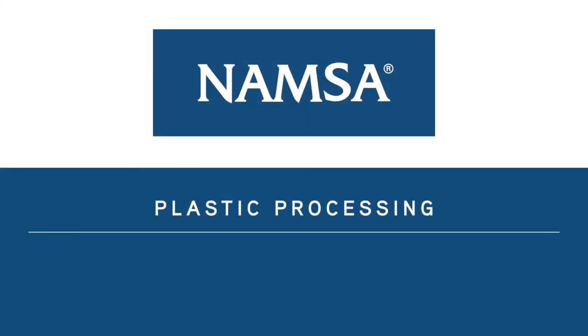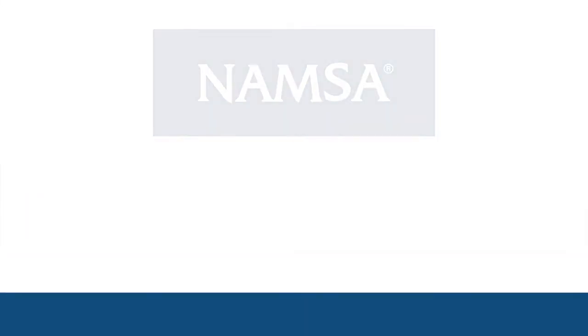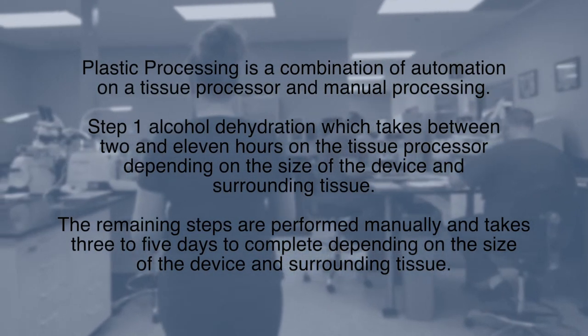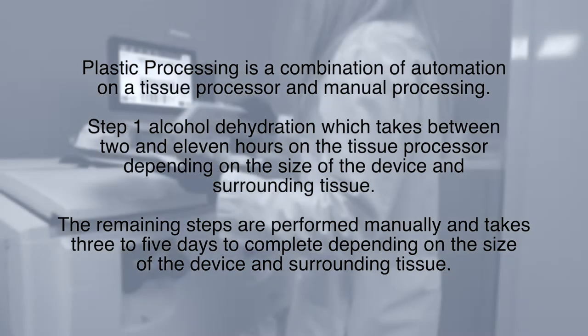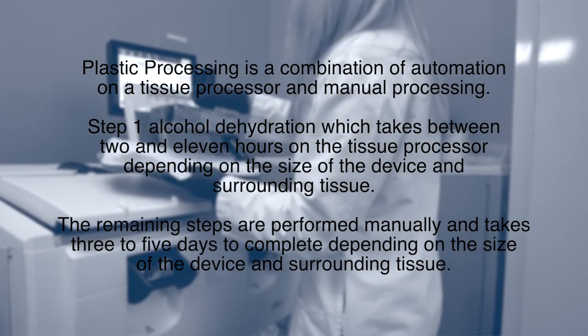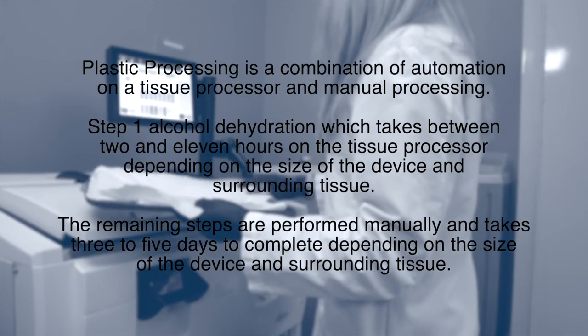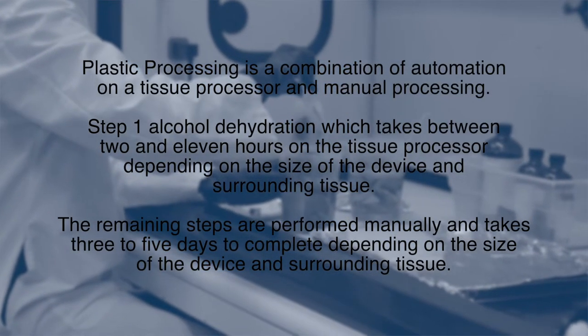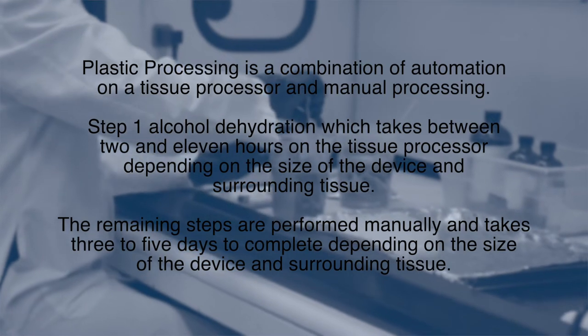Plastic processing. Unlike paraffin, plastic processing is a combination of automation on a tissue processor and manual processing. Step 1 is alcohol dehydration, which takes between 2 and 11 hours on the tissue processor depending on the size of the device and surrounding tissue.